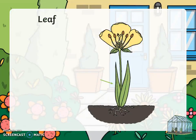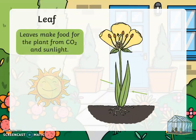Number one is the leaf. Leaves make food for the plant from CO2 and sunlight.